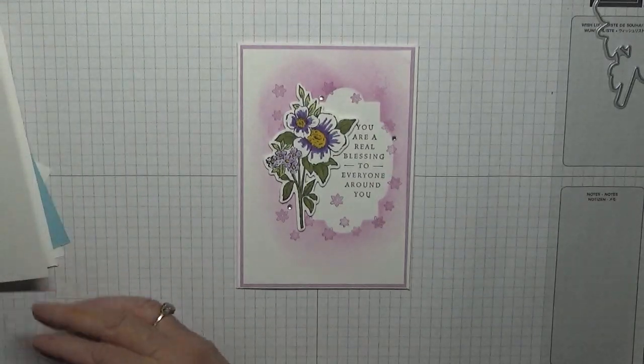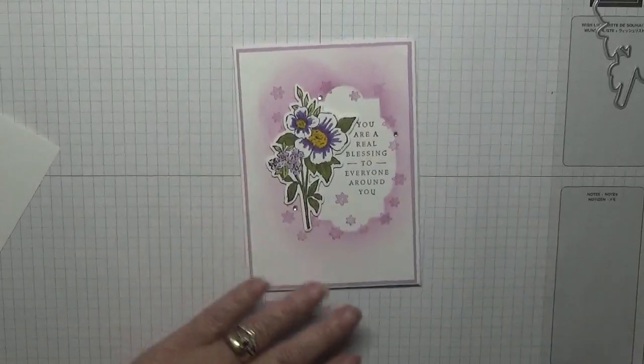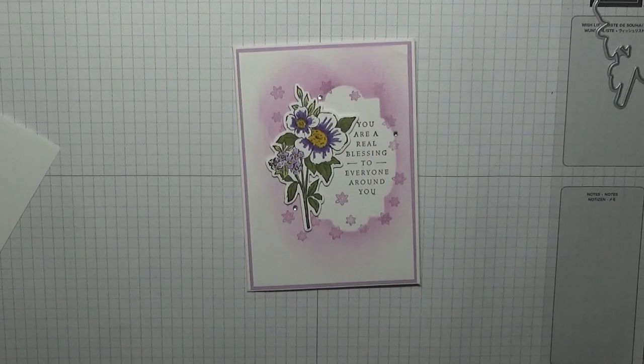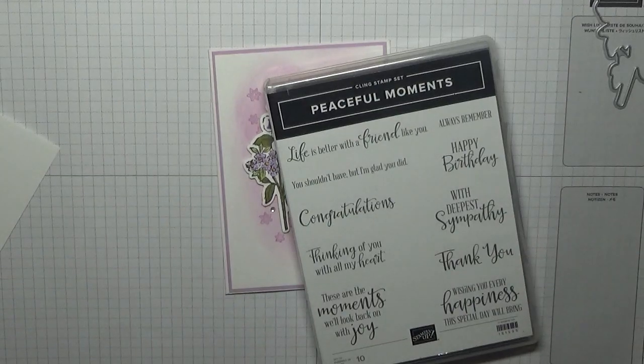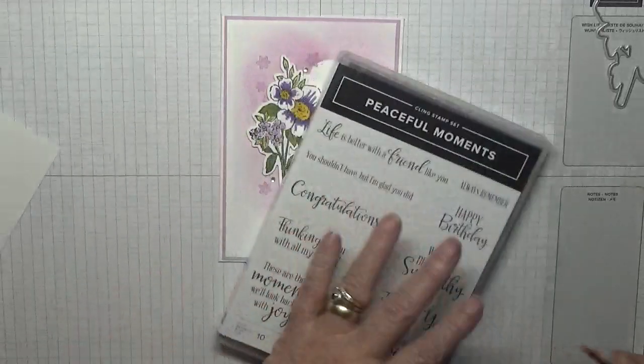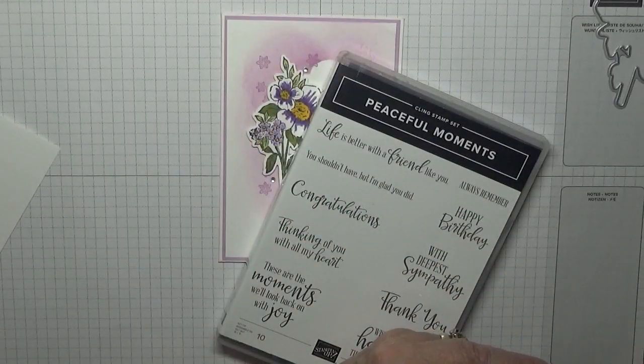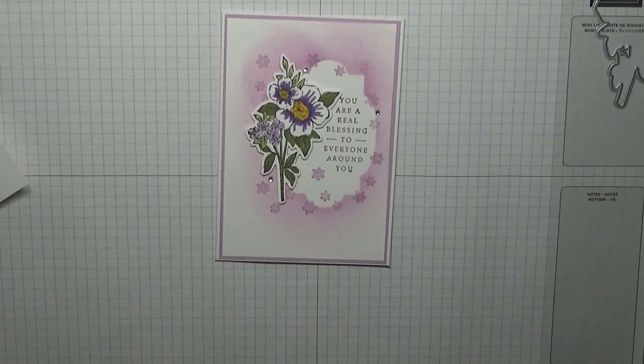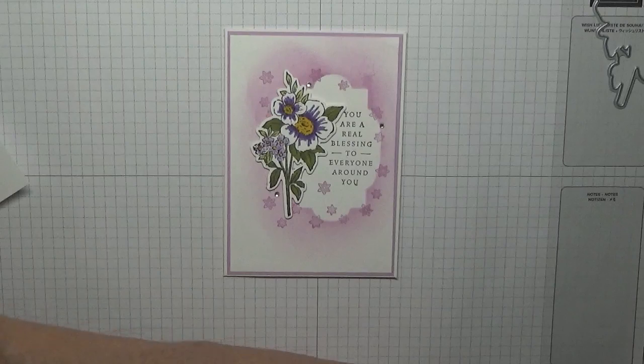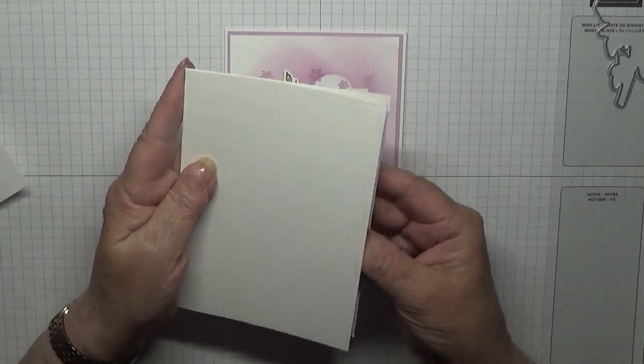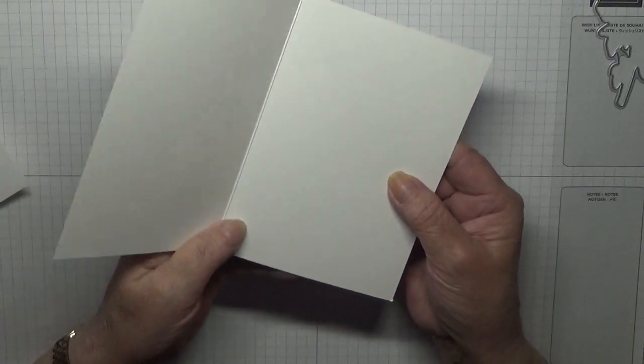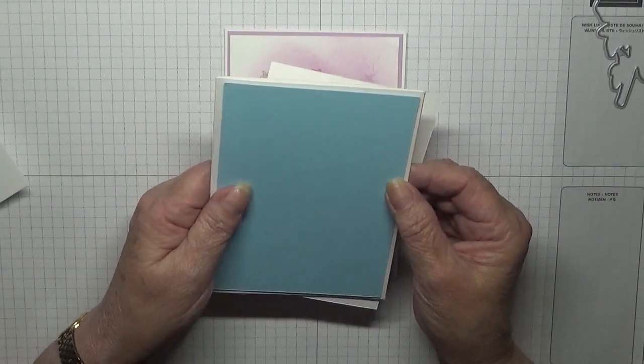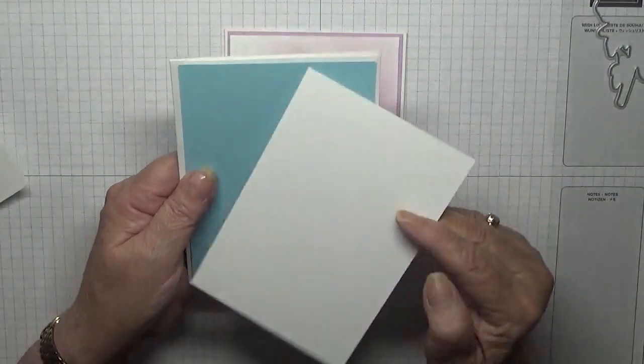I also used Peaceful Moments and the thank you stamp. I've got a card base of eight and a quarter by five and seven eighths scored at four and one eighth folded in half. I've got a piece of balmy blue at five and five eighths by three and seven eighths, and a piece of basic white at three and three quarters by five and a half.